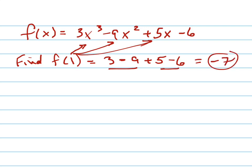The other way you could have done it is you could have done synthetic division with 3, negative 9, 5, negative 6.